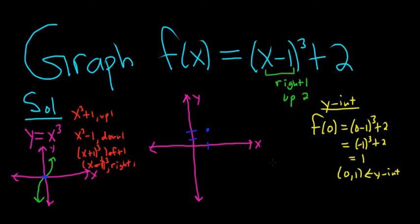To find the x-intercepts, we take the entire function and we set it equal to 0. So to find the x-intercepts, we take the entire function and set it equal to 0. So we have x minus 1 cubed plus 2 equals 0. And then we have to subtract the 2. So we get x minus 1 cubed equals negative 2.